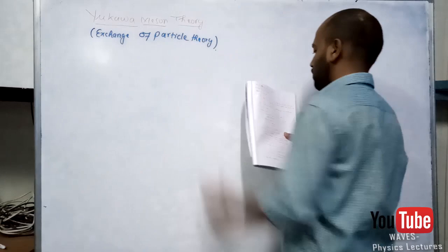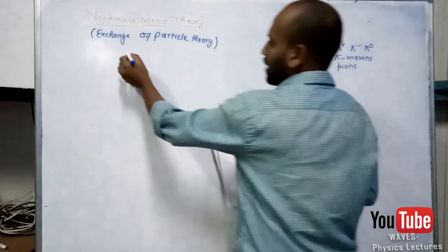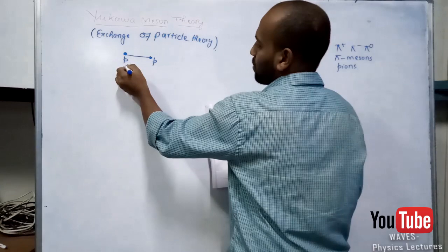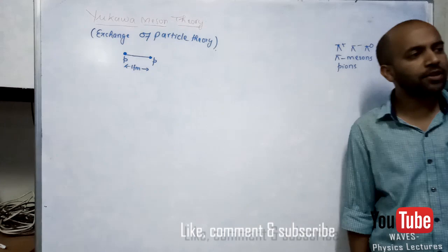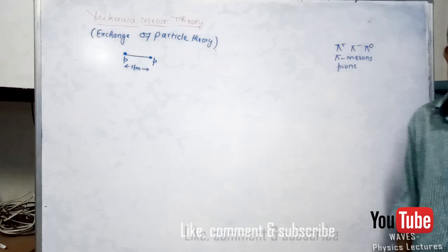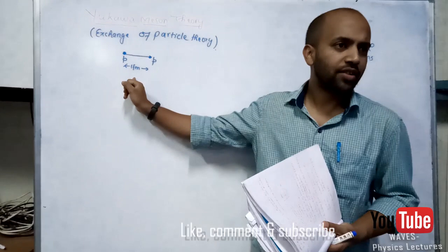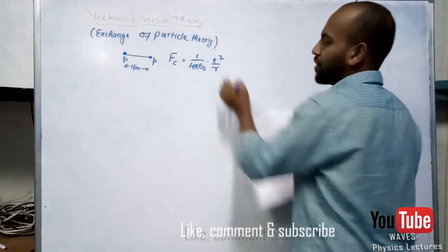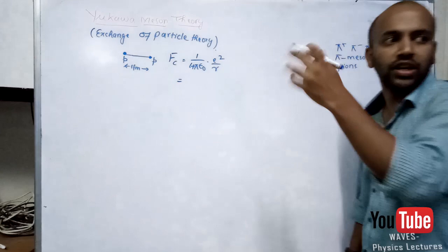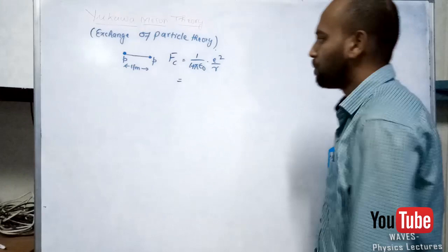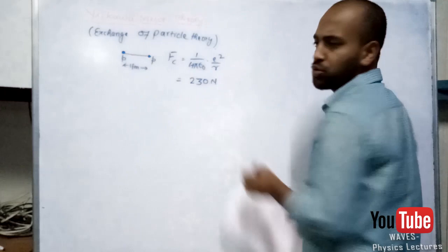Let's imagine two protons separated by a distance of 1 femtometer. Since both are positive, there should be some Coulomb force — they are going to repel each other. The Coulomb force would be 1 over 4πε₀ times e squared divided by r. Putting the values: 9×10⁹, charge of proton 1.6×10⁻¹⁹, and distance 10⁻¹⁵ meters, the value we approximately get is 230 newton.